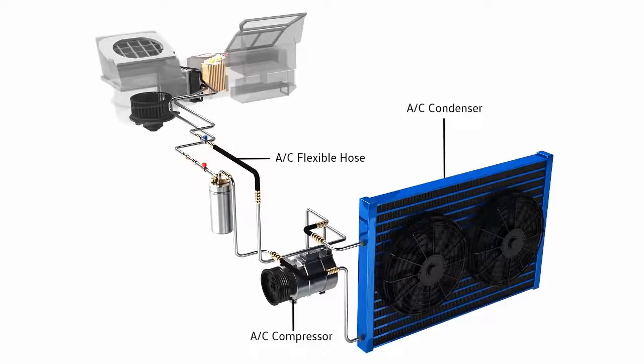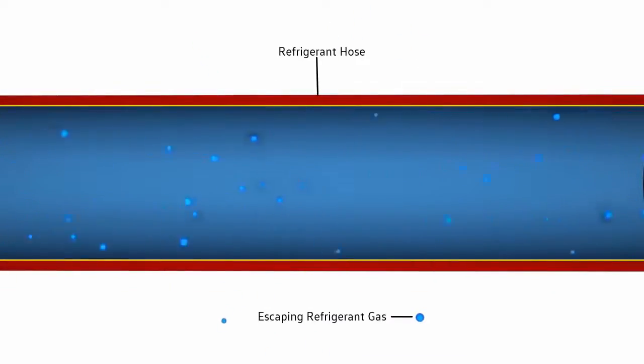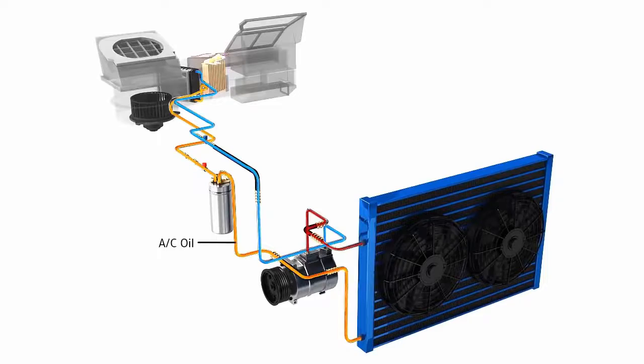The air conditioning system can lose up to 10% of its gas each year and requires regular servicing to work efficiently and effectively. The air con system is lubricated by a special oil that circulates through the system with the refrigerant gas.